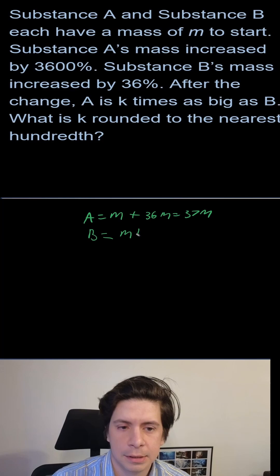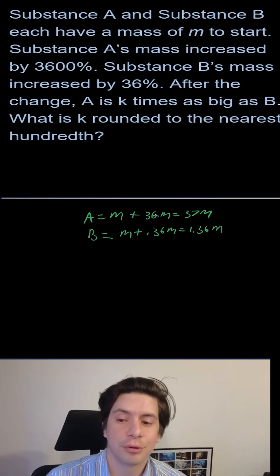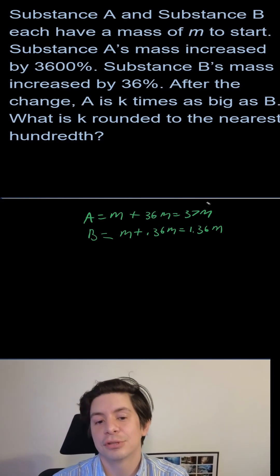B is going to equal m plus 0.36m. That's going to be 1.36m. The thing that throws people off is they might do 36, they'll just do the percents divided, but remember it's increased by, and then you can just divide these two values.